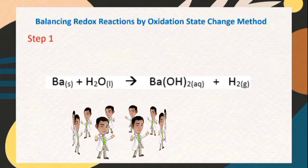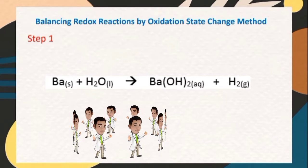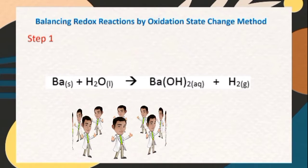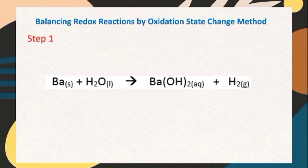For the reaction Ba plus H2O yields Ba(OH)2 plus H2, the oxidation states of the following elements are as follows: for Ba it is 0, for H it is positive 1, for O it is negative 2, for Ba under the product side it is positive 2, O is negative 2, and H is positive 1.